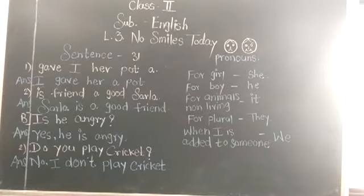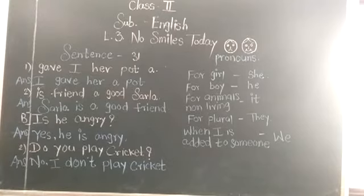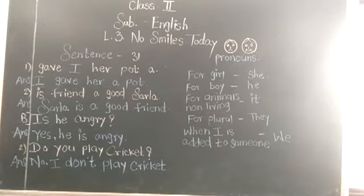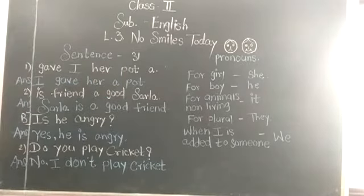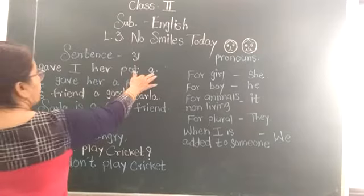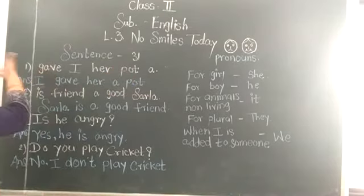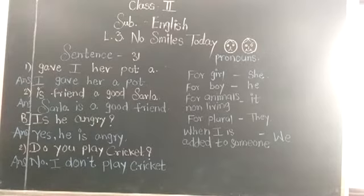Now see question A: put the words in the correct order to make a sentence. In this question, the words are not in the correct order, so we have to arrange them to make a meaningful sentence. See: give, I, her, what, her — you can't understand anything from this. It is not a correct sentence because at the end there is only a full stop and in the beginning there is no capital letter. So what can we do to make it a correct and meaningful sentence?